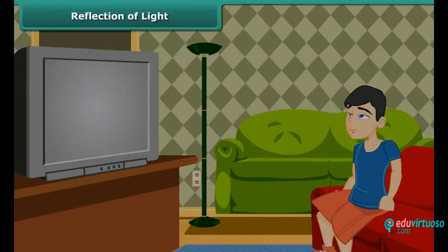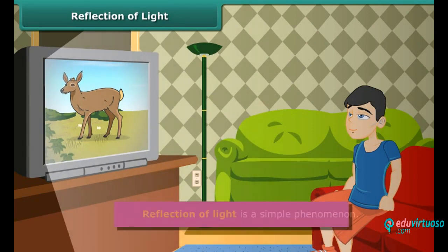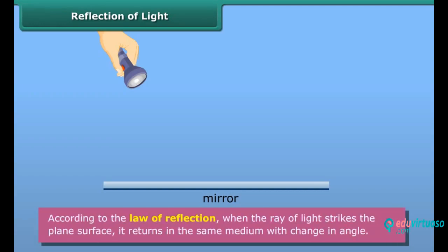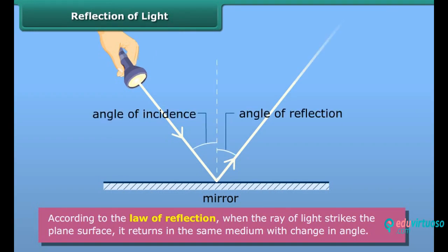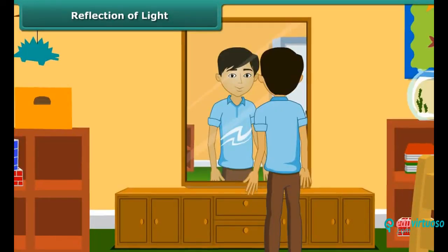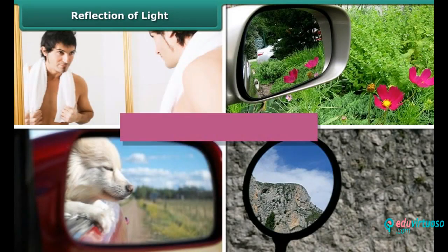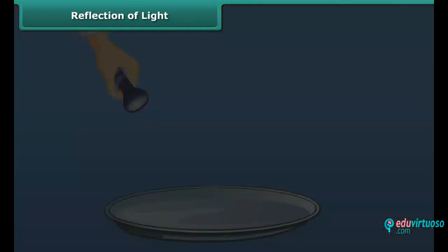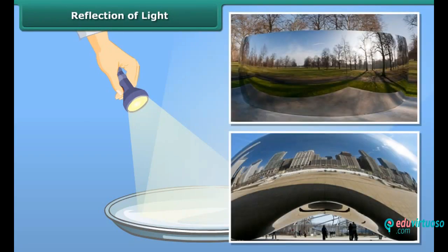Reflection of light — can you tell how do we see objects? We see objects when light reflected from them reaches our eyes. Reflection of light is a simple phenomenon. According to the law of reflection, when the ray of light strikes a plain surface, it turns in the same medium with a change in angle. When we look in a mirror, we see an image of ourselves reflected back. A mirror is an object that reflects light. Any polished or shiny surface can act as a mirror and can change the direction of light.